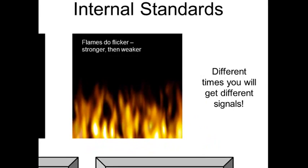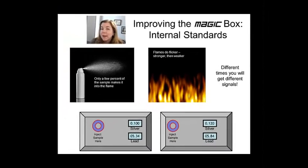And what that means is that the sampling efficiencies, even if you've done everything perfect, are not going to be the same trial to trial. So the magic box isn't going to be perfect. One trial, you might get one amount of silver. The next trial, you might see a little bit more in the signal.